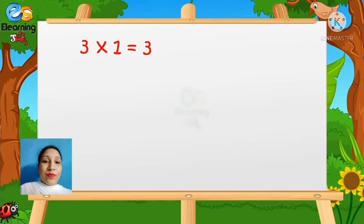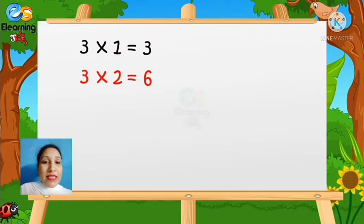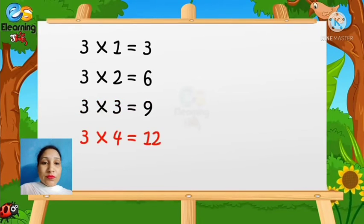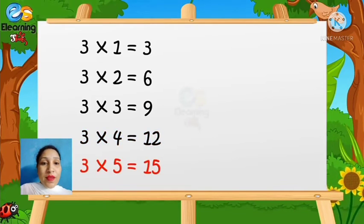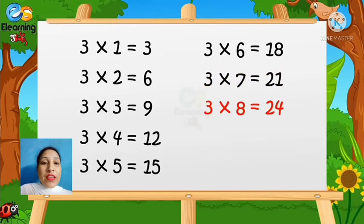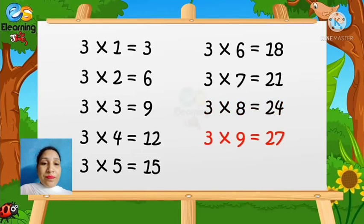Now we will revise the table of three again. Three ones are three, three twos are six, three threes are nine, three fours are twelve, three fives are fifteen, three sixes are eighteen, three sevens are twenty-one, three eights are twenty-four, three nines are twenty-seven, and three tens are thirty.